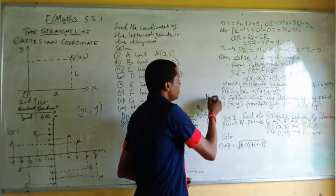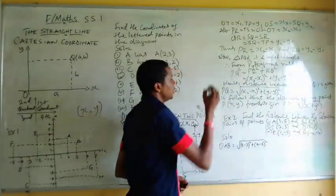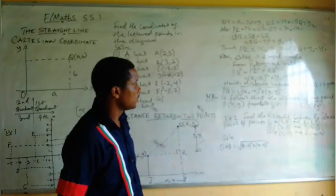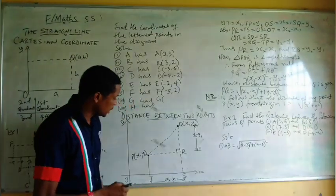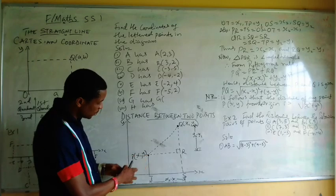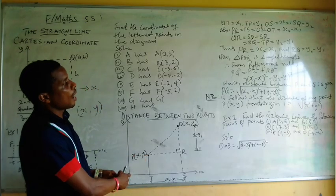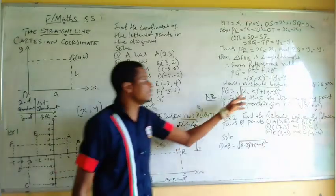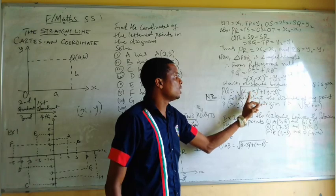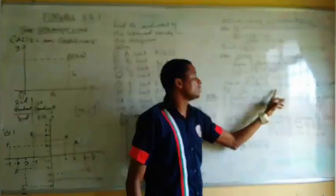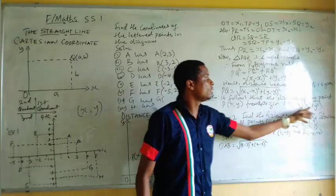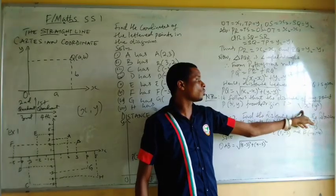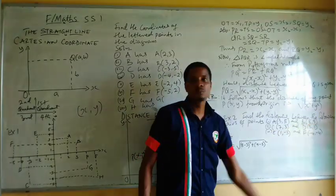Note: if the point is measured from the origin, then X1 equals 0 and Y1 equals 0. The terms involving X1 and Y1 become zero, so we are left with X2 and Y2. That means if measuring from the origin, the distance simplifies to the square root of X2 squared plus Y2 squared.